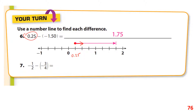Moving right one full space from 0.25 gets us to 1.25, then the additional half space brings us to 1.75. Passing through 1.25 and 1.5, we end up at 1.75.